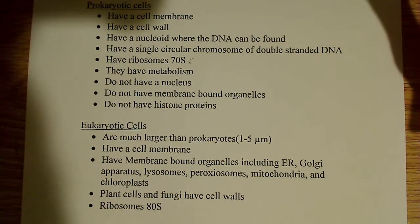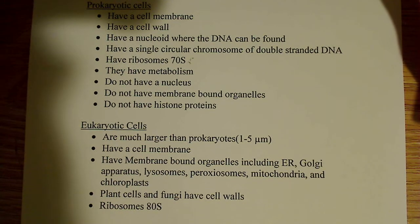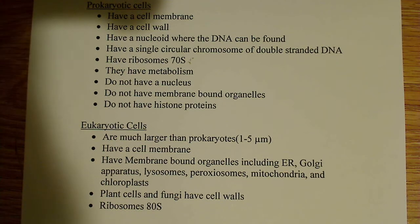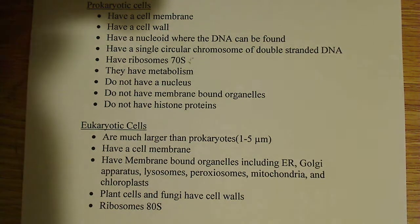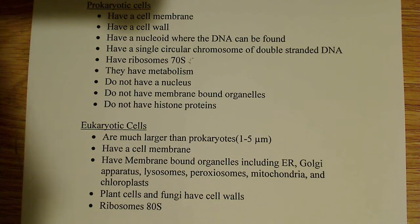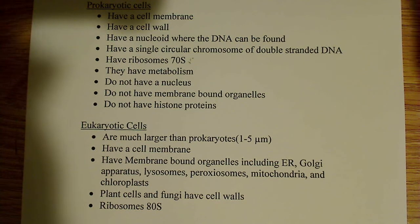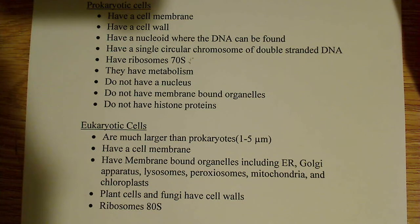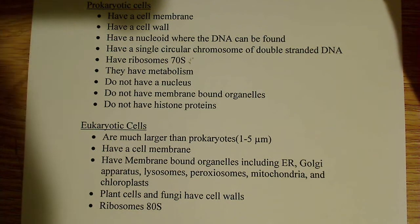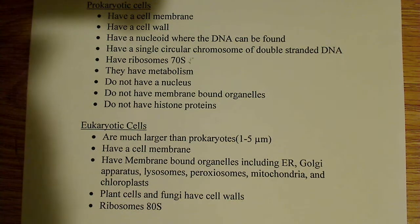Eukaryotic cells are much larger. Prokaryotic cells are generally 1 to 5 micrometers in length, while eukaryotic cells can be much bigger. Eukaryotes do have a cell membrane, or plasma membrane. They have membrane-bound organelles, including the endoplasmic reticulum, Golgi apparatus, lysosomes, peroxisomes, mitochondria, and chloroplasts — those are some of the main ones.